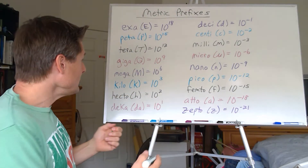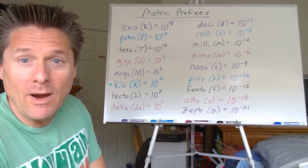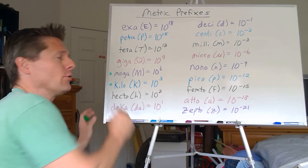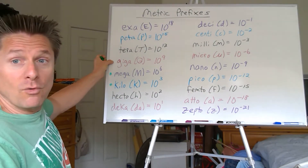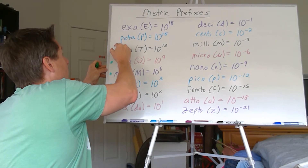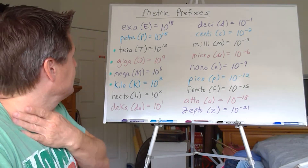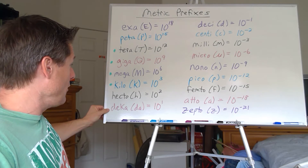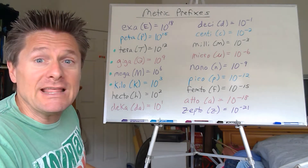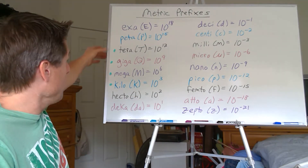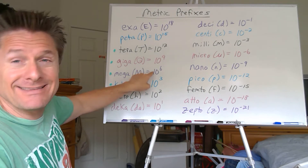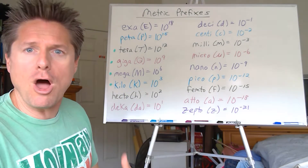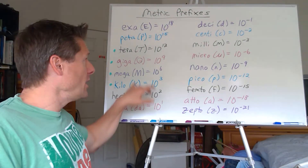The ones we'll run into in chemistry: obviously kilo quite a bit, so memorize that — 10 to the third. I'd like you to know mega even though we don't use it a whole lot in chemistry. Giga, of course, because of the computer industry. And Tera, since you get storage space in terabytes now. So I would memorize those four: kilo, mega, giga, tera — 10 to the three, 10 to the six, 10 to the nine, 10 to the 12th, all by factors of 1,000. I've personally never used Hecto or Deca.